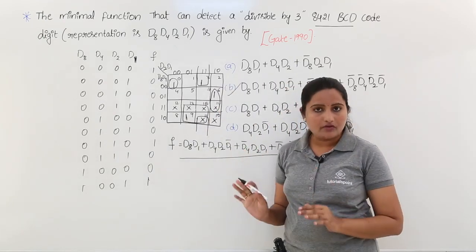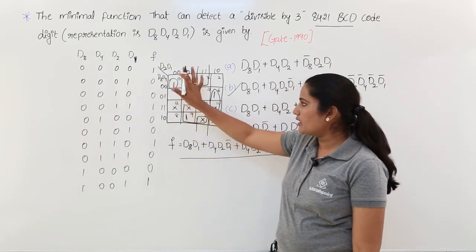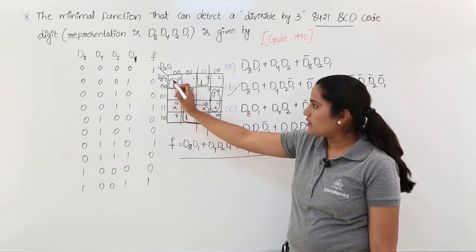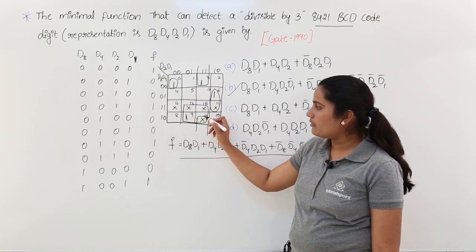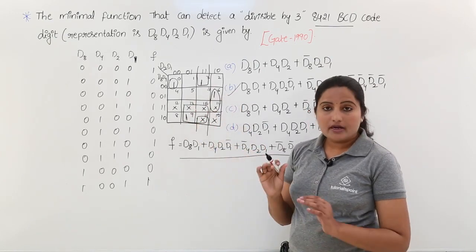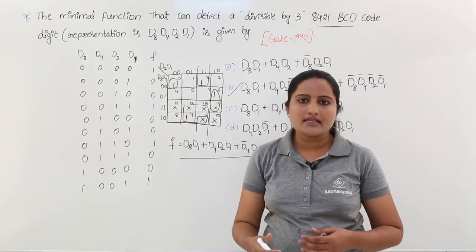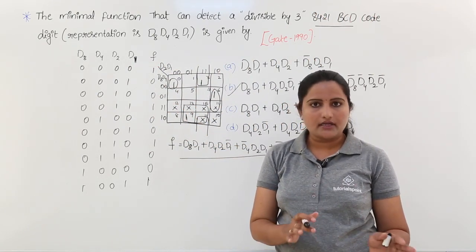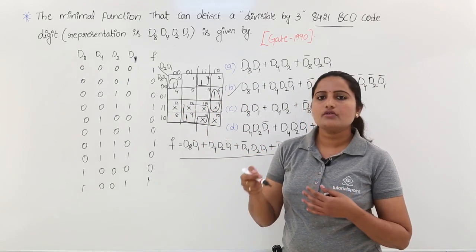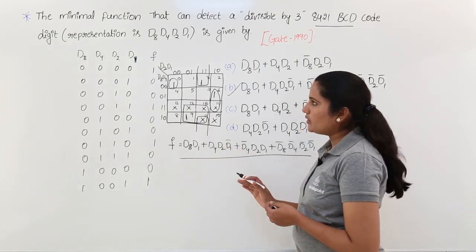In GATE-type questions like this, you do not need to construct a full truth table. Directly take the K-map with cell values: place 1s at 0, 3, 6, 9 (divisible by 3), and mark 10 to 15 as don't cares because they cannot be represented as single-digit 8421 BCD. Use don't cares only to help group 1s — any don't cares left ungrouped can be ignored.